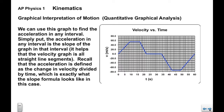We can also use this graph to find the acceleration in any interval. The acceleration in any interval is the slope of the graph in that interval. The velocity graph is all straight line segments — we will not be dealing with curving velocity graphs in this course. Acceleration is defined as the change in velocity divided by time: a equals delta v over delta t, which is rise over run — vf minus vi over tf minus ti.